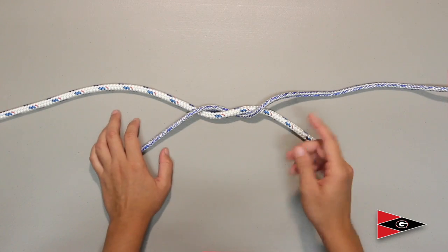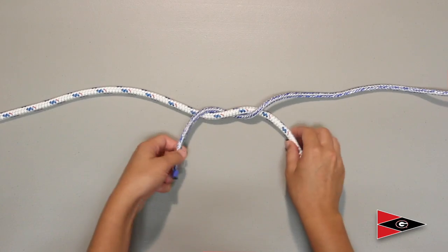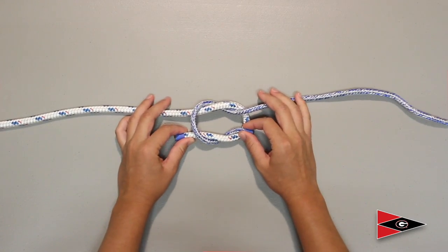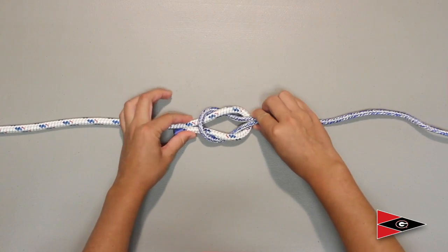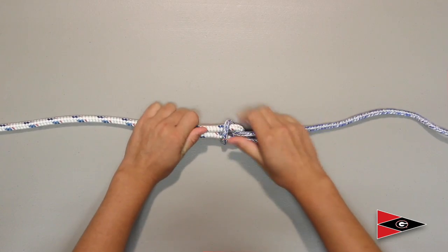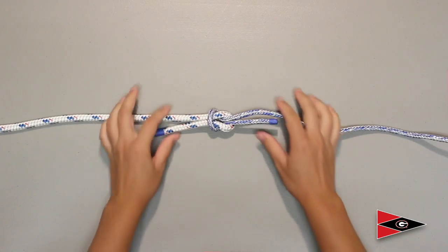And then since we just came from right over left, we are now going to go left over right. Do the same cross behind just like you're starting to tie your shoes. And then grab both of these and pull tight. And adjust your knot. Make sure it looks good. And that is a successful square knot.